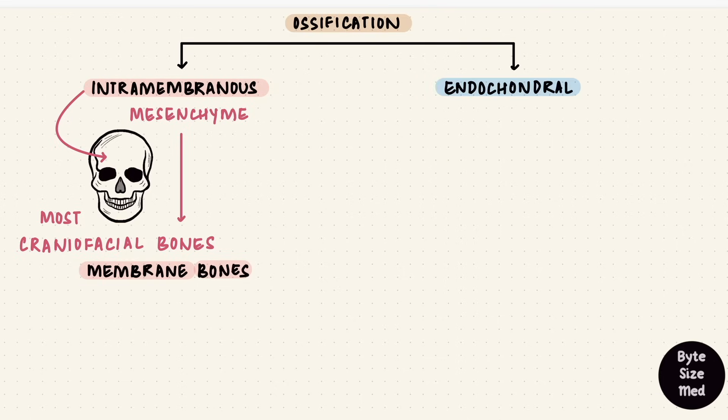Endochondral ossification involves cartilage. It's right there in the name, chondral, cartilage. Here the mesenchyme forms cartilage first, which serves as a template, and that cartilage gets replaced by bone. Cartilage does not turn into bone, but it gets replaced by bone. And we'll see how in a bit.